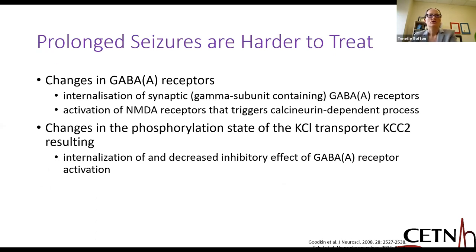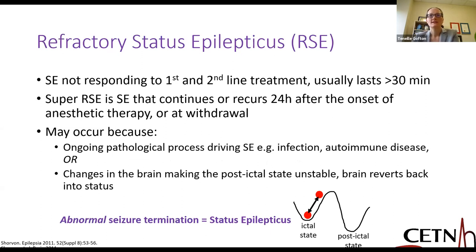Prolonged seizures are harder to treat because of changes in GABA receptors and other receptor changes, including abnormal phosphorylation. When we can't terminate a seizure, this can lead to refractory status epilepticus. Refractory status is one that lasts longer than 30 minutes without response to first or second line treatments. Super refractory status epilepticus continues beyond 24 hours despite all best therapies, or recurs after 24 hours of anesthetic and withdrawal of that anesthetic agent.